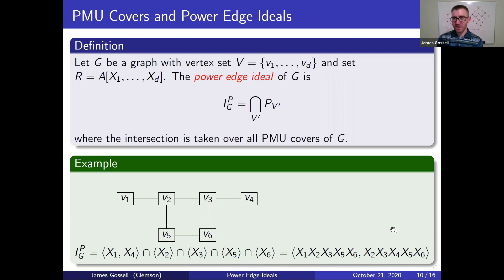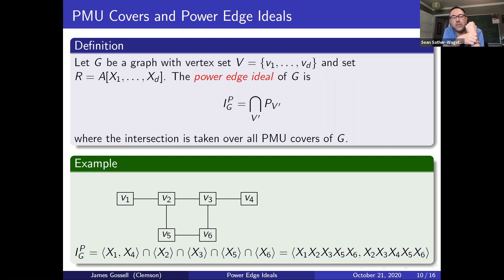We're really just getting started on this construction. Michael knows how to characterize the generators for the power edge ideal of an arbitrary tree, but we don't know how to do that for a graph with a cycle — how to write down the generators without taking the decomposition and assembling pieces using LCMs of the generators.